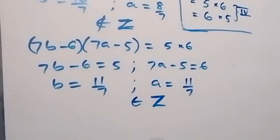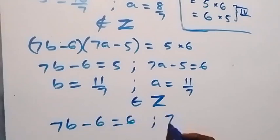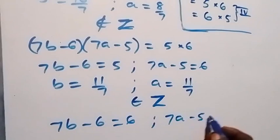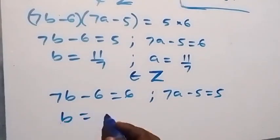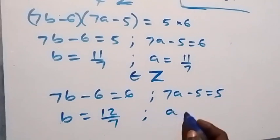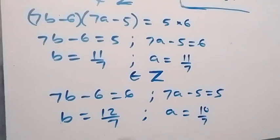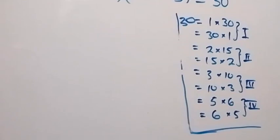When interchanged: 7b minus 6 equals 6 and 7a minus 5 equals 5. Solving gives b equals 10 over 7 and a equals 10 over 7 — these are also not members of the integer solution. Therefore, from our case analysis, integer solutions come from Case 1 and Case 2.